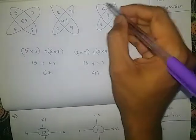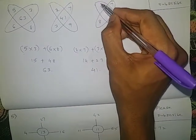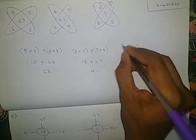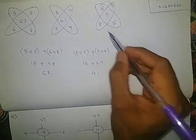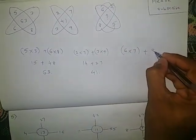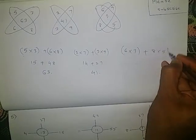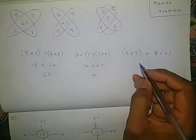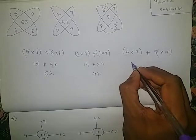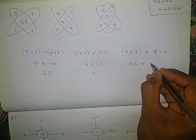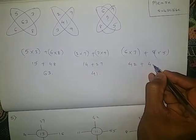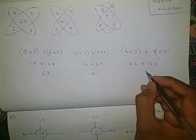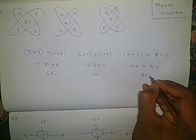Next here also: the product of the upper 2 numbers — 6 into 7 is 42. Plus 8 into 5 is 40. 42 plus 40 is 82.